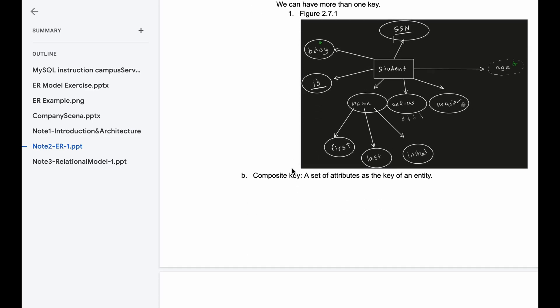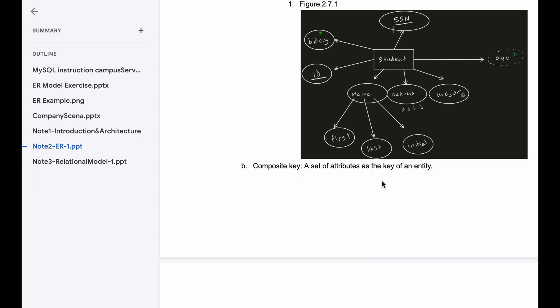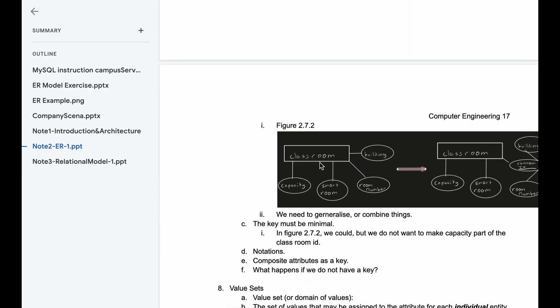Now for composite keys. Composite keys are a set of attributes as the key of an entity. So what this means is that if we have something like to the left, where we have our classroom, we have capacity, if it's a smart room, room number, and building. Well, each of these can have multiple attributes underneath them. So we don't have a key.